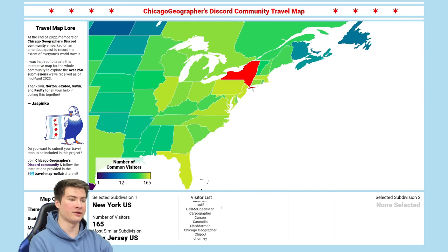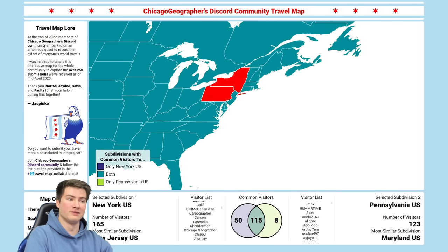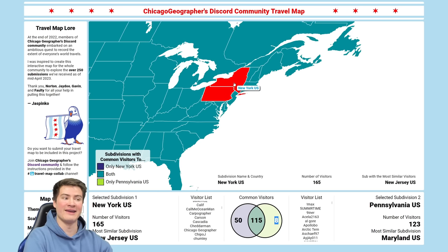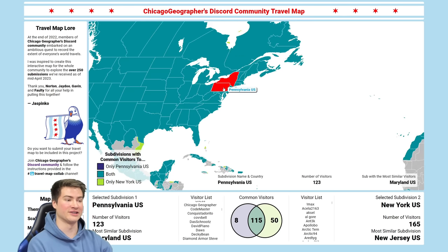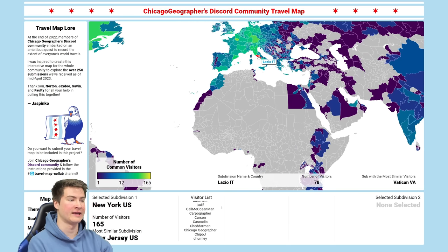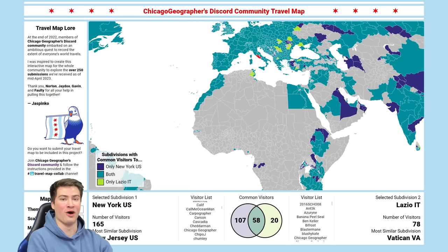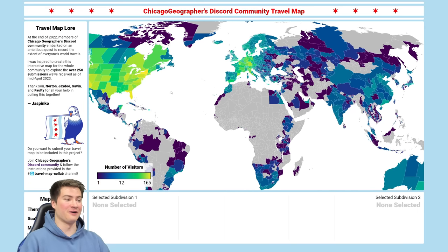We can also compare it to another subdivision. Let's click on Pennsylvania and compare these two. We can see that 115 visitors have been to both of them, 50 have only been to New York and not Pennsylvania, but interestingly eight people have been to Pennsylvania and not New York. I personally think this Venn diagram feature is really cool. It's interesting not just for nearby subdivisions — we can compare New York and Lazio, Italy and see just the overlap there. It's super interesting. I just love these features — it's so cool to browse around with this stuff.